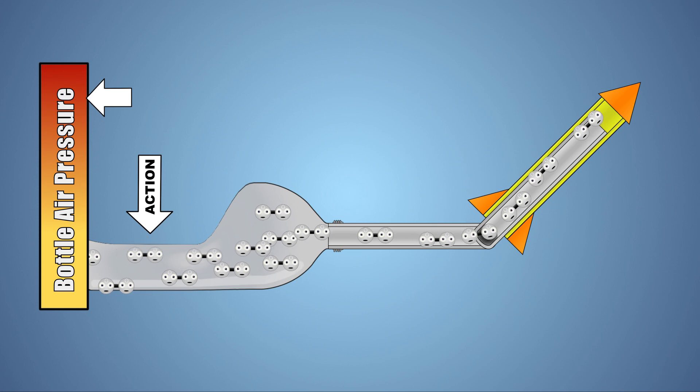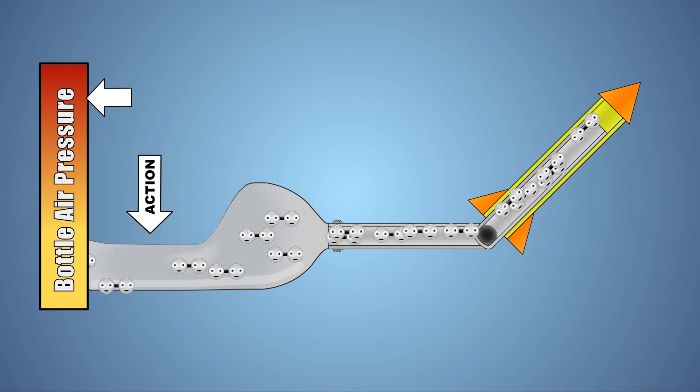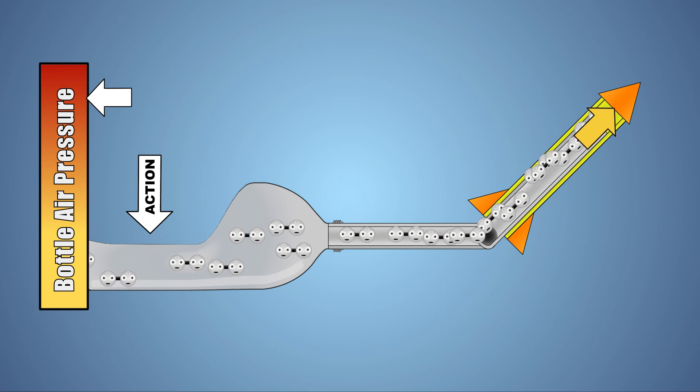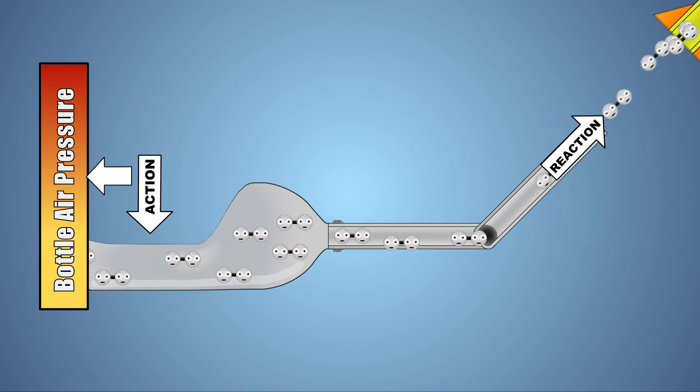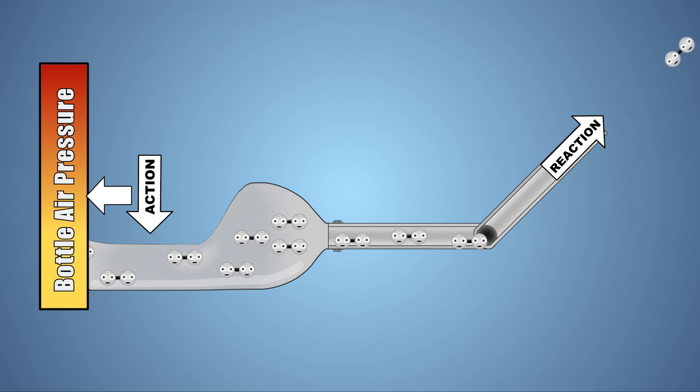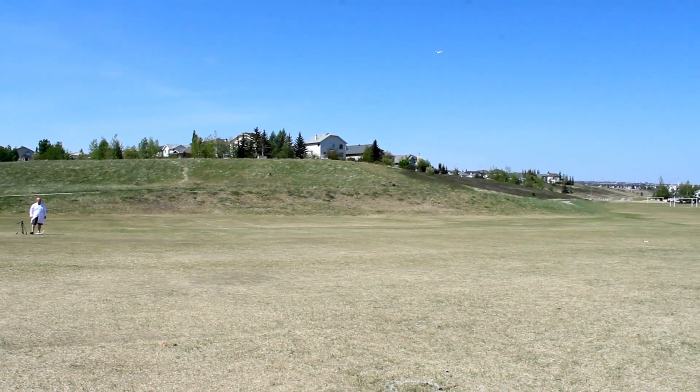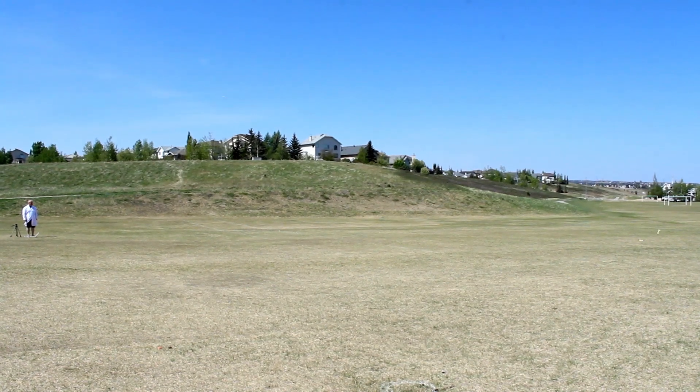To balance out the pressure, air molecules rush out of the bottle, through the pipes, and press against the taped barrier in our rocket with enough force to cause the rocket to shoot off the pipe and fly away. Balancing out the pressure inside and outside of the bottle. The more pressure that can be generated within our launcher, the further the rocket will fly.